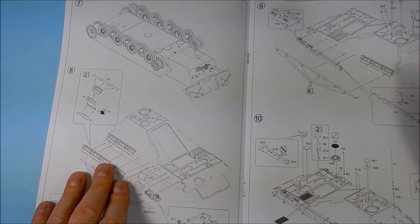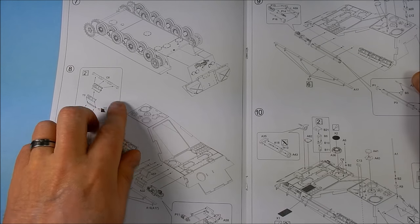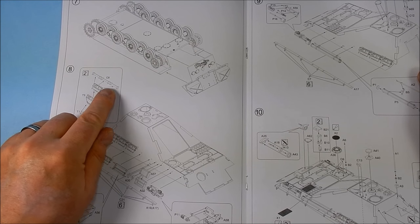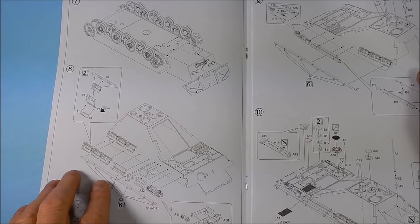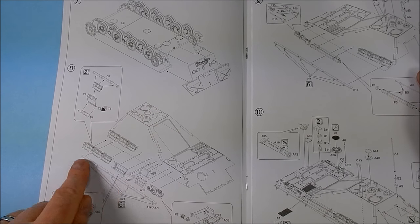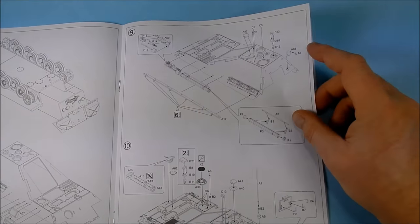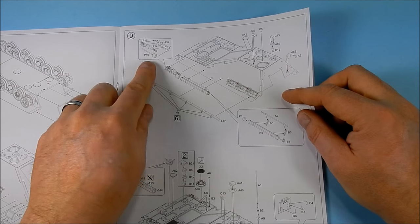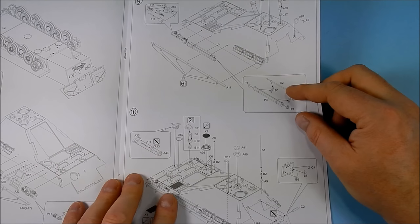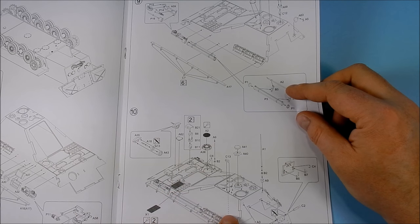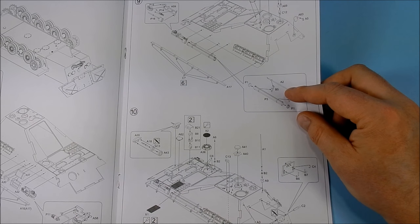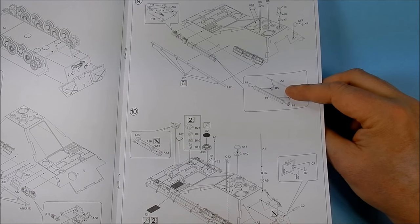Typical stowage box is no different than most other Panthers that you've built with some photo etch clasps. They're fairly basic, they work fairly well. The spare track links with the hangers. The hangers are kind of clunky. You'll see that later on as well. With some tool stowage on both the left and right hand sides.